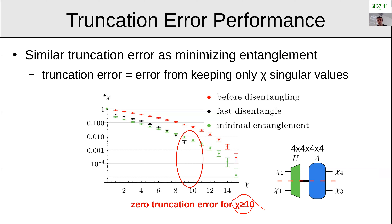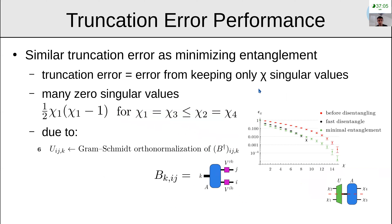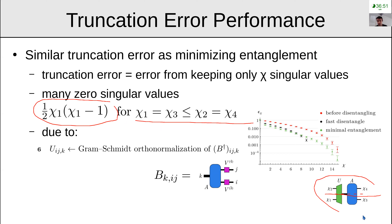Interestingly, once you reach a bond dimension of 10 or greater, the fast method actually has zero truncation error, due to the Gram-Schmidt method. The Gram-Schmidt orthogonalization gives many zero singular values across the horizontal cut when chi_1 equals chi_3 is less than or equal to chi_2 equals chi_4, where these bond dimensions are defined in the bottom right.